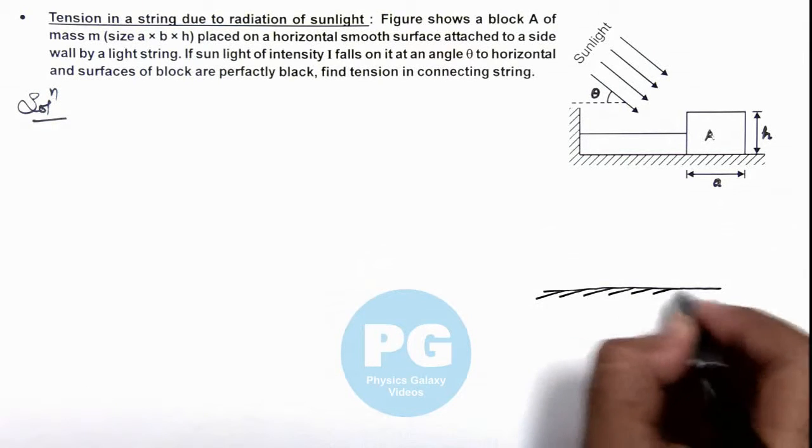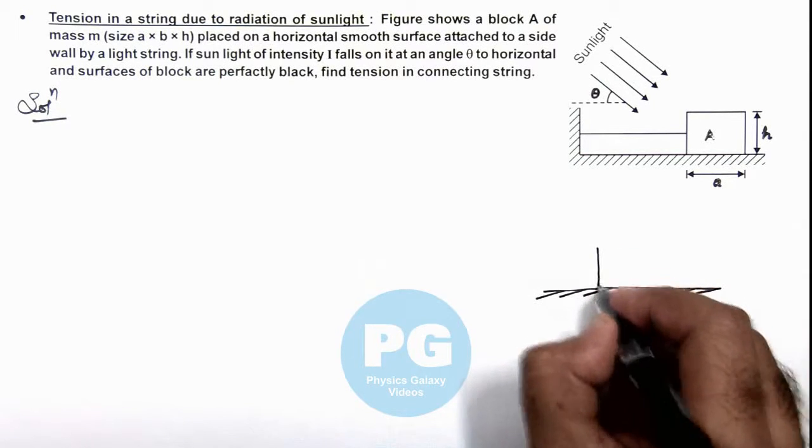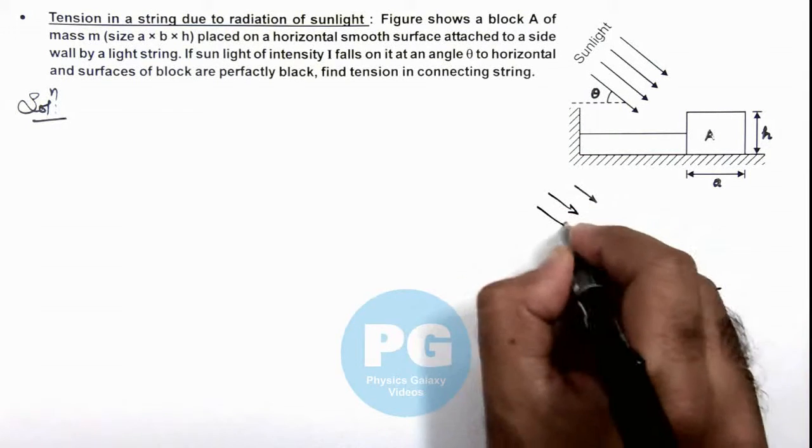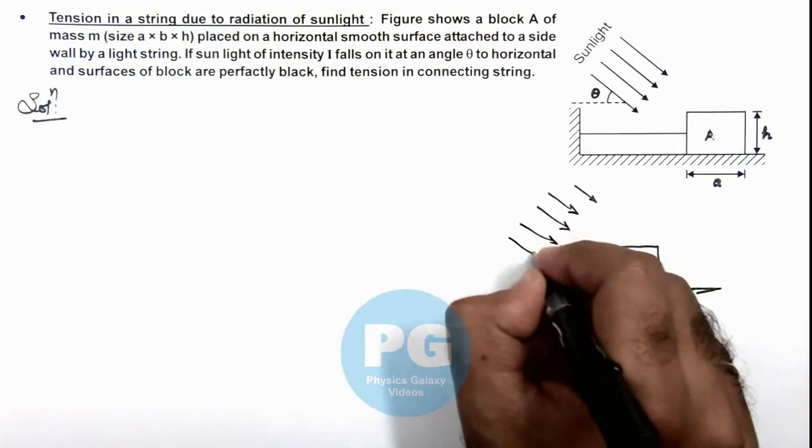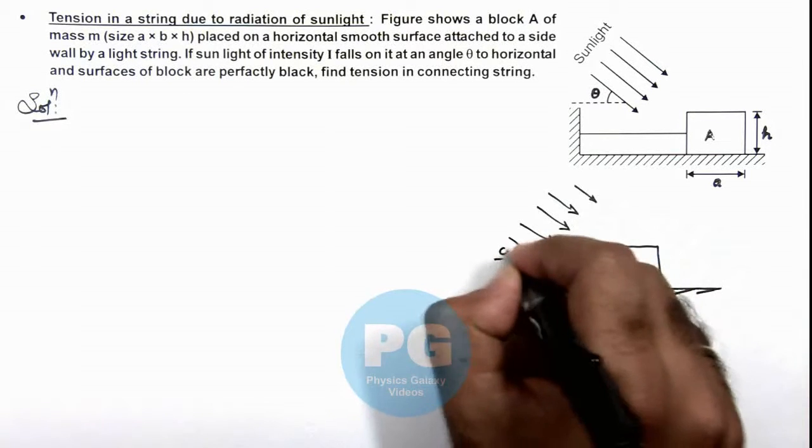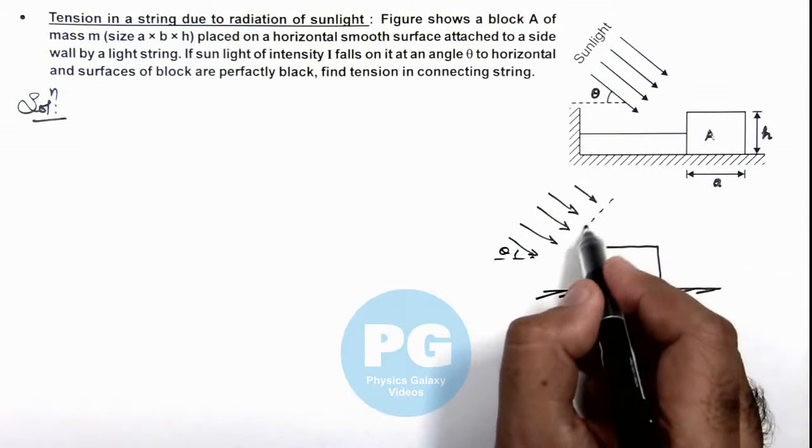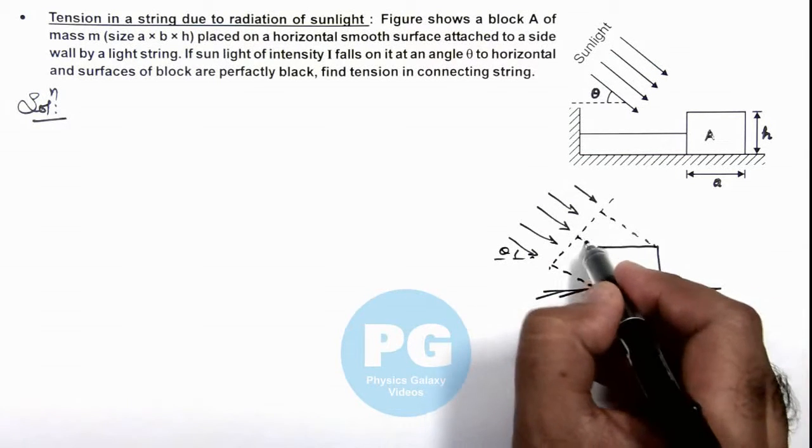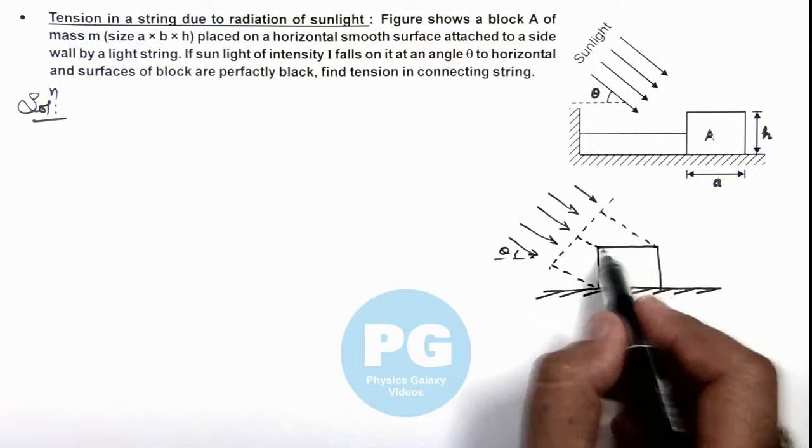If this is the block on which the light is incident in a direction at an angle of θ to horizontal, here we can easily find out the cross-sectional area of light beam in which the light is incident onto the surface of this block.